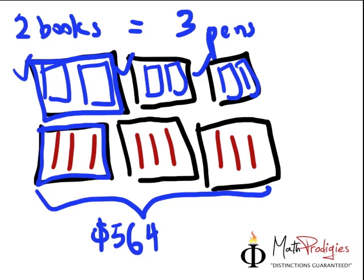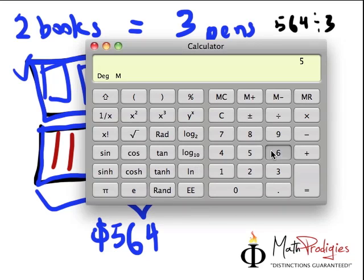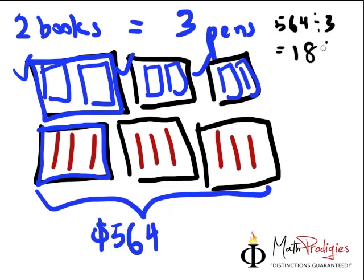So first of all I'm gonna divide this number by three. So I'm gonna write the working here. Very small but I hope you can see it. Five six four divided by three will give me. You do your working. Don't use your handy-dandy calculator. Okay that's for me.